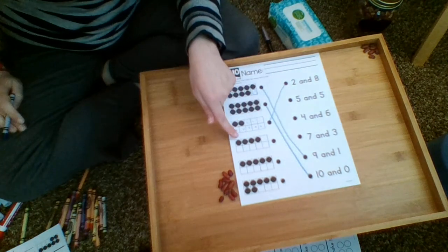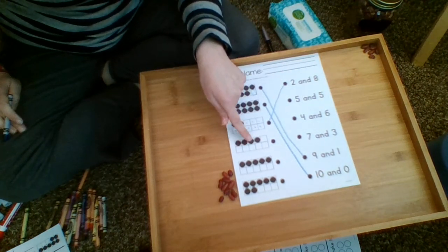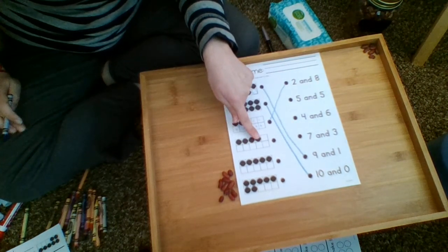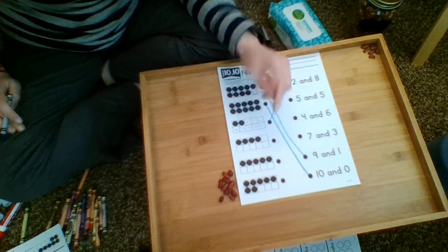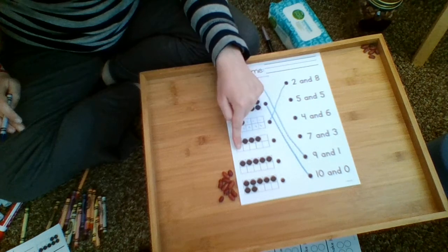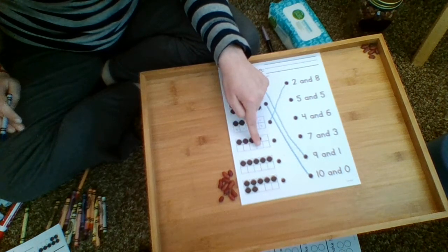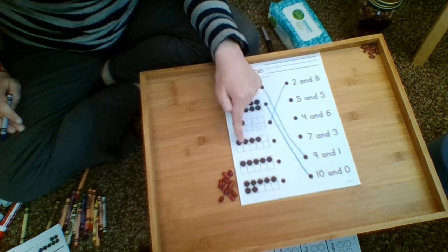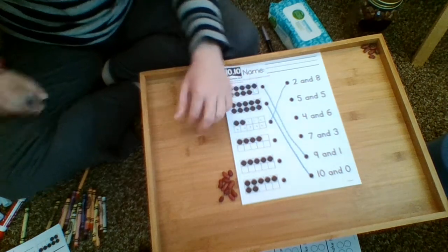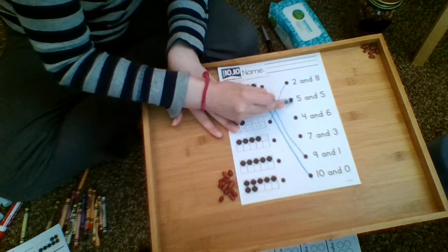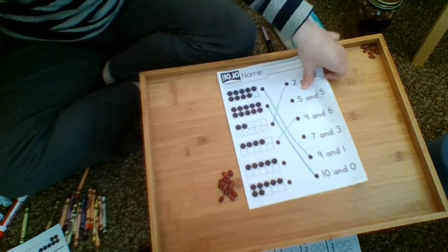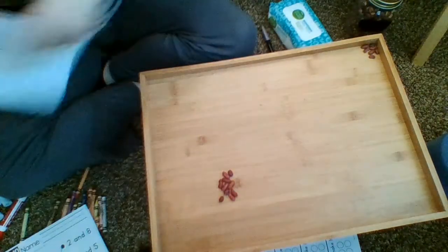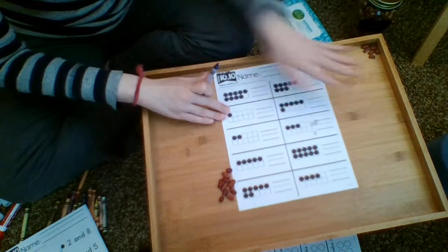I'll do one more. They gave me one, two, three, four dots. I need to figure out how many to put with four to make ten: one, two, three, four, five, six. So four and six make ten. I need to find that on this side and draw my line.